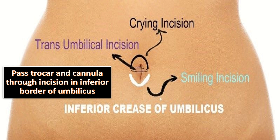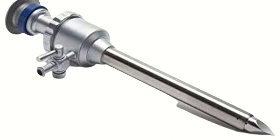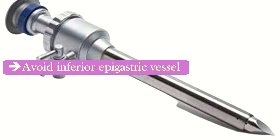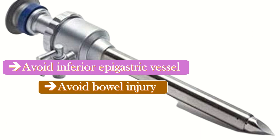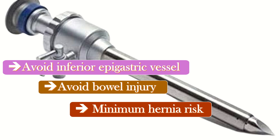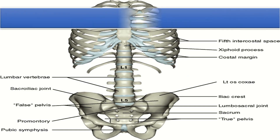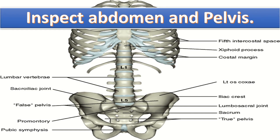Once the insertion of the primary trocar is completed, insert the lateral trocar under direct vision — lateral to the inferior epigastric vessels, 2 cm from the anterior superior iliac spine, 3 cm above the symphysis pubis, and 8 cm lateral to the midline. This is to avoid inferior epigastric vessel injury, bowel injury, and risk of hernia. Then inspect the abdomen and pelvis.